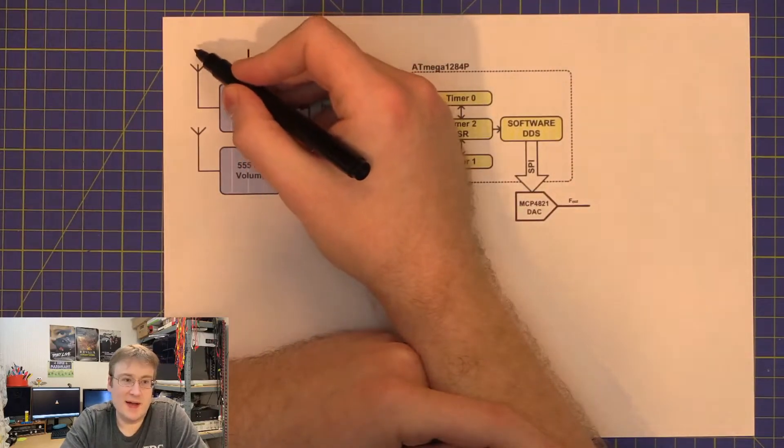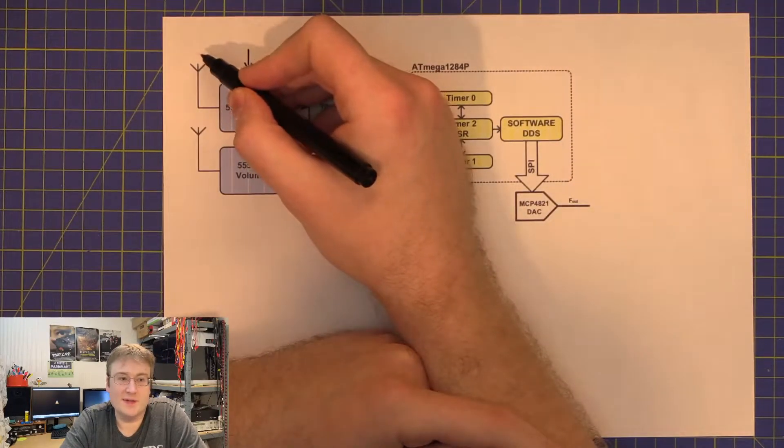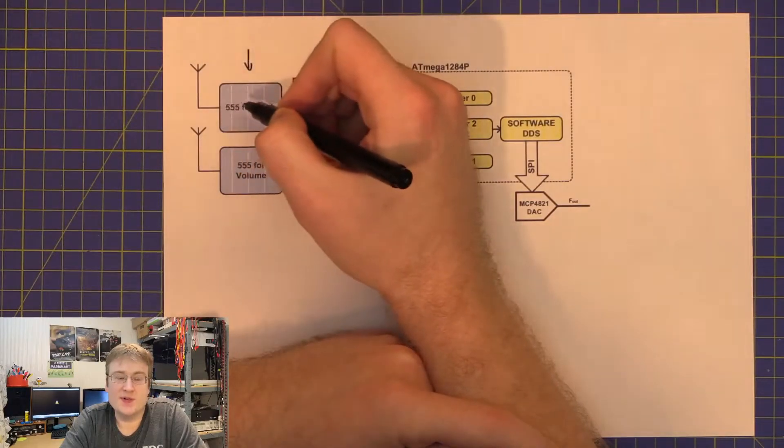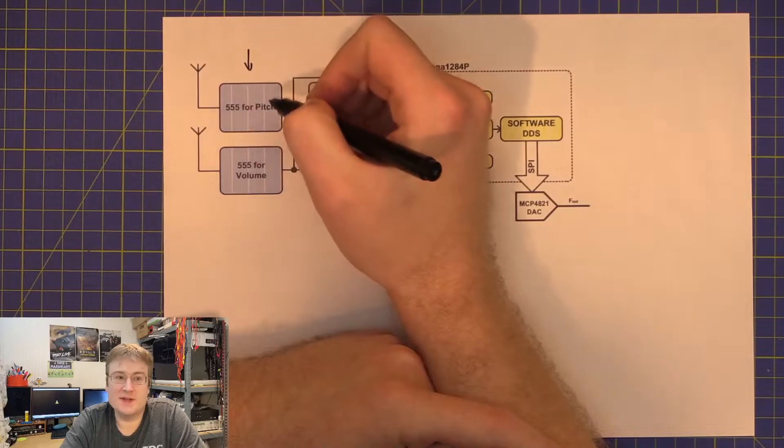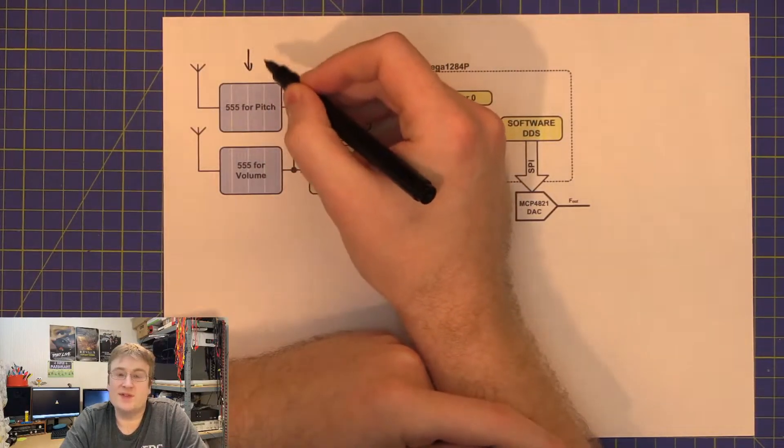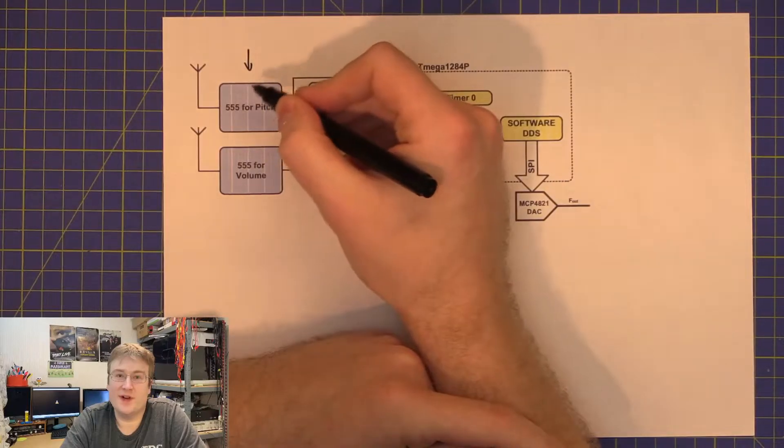Essentially as we move our hand to and from one of the antennas, we're changing the effective capacitance in this astable 555 oscillator, and we're going to change the frequency at which this 555 timer oscillates.